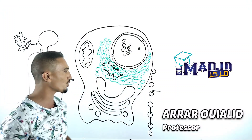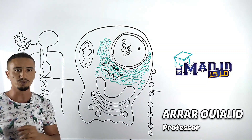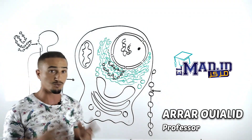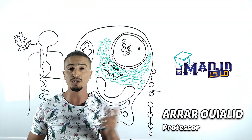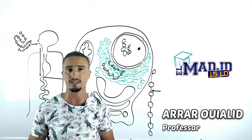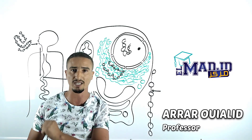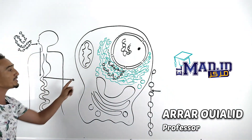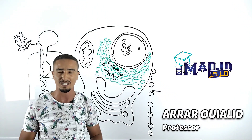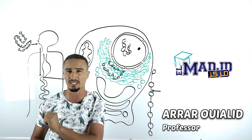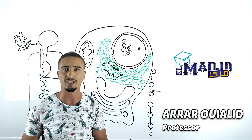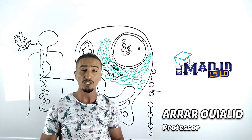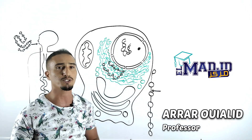Protein is an essential part of the human diet. It's found in a variety of foods like eggs, dairy, seafood, legumes, meat, nuts and seeds. The protein that we eat gets broken down and reformed into new proteins in our bodies. These proteins do everything from fighting infections to helping cells divide. You name it, they're doing it.